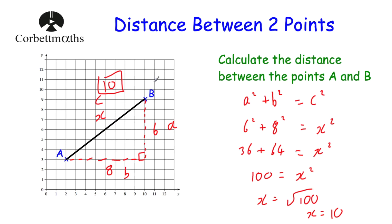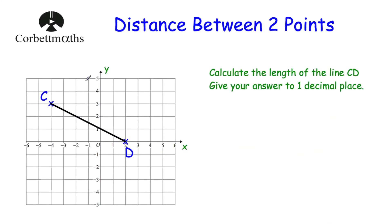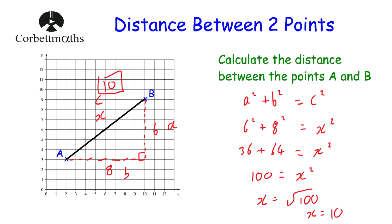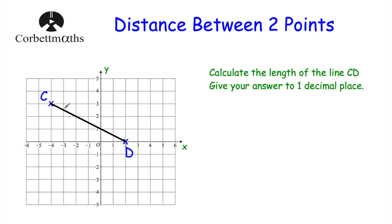So in this question, we used Pythagoras's theorem to work out the distance between two points A and B. Now let's have a look at another question. We've got the point C and the point D, and we've been asked to calculate the length of the line CD, and we've been asked to give our answer to one decimal place. Rather than just being asked for the distance, we've been asked for the length of the line CD — but it's the same approach, we'll still use Pythagoras's theorem. This is going to be a calculator question.